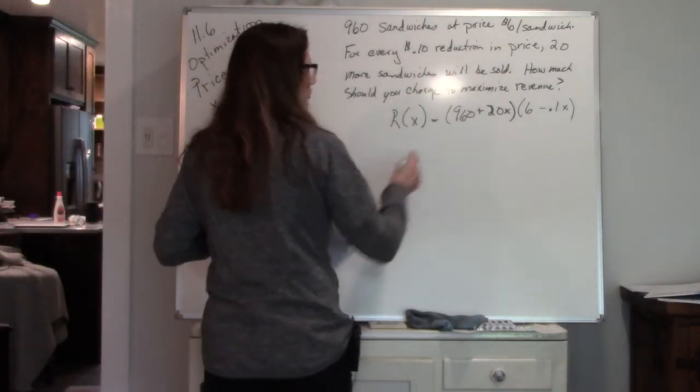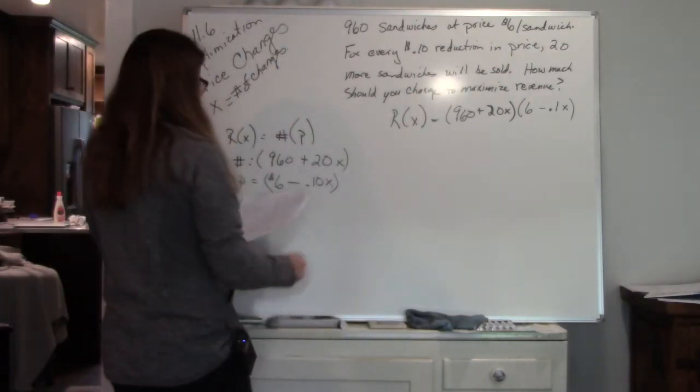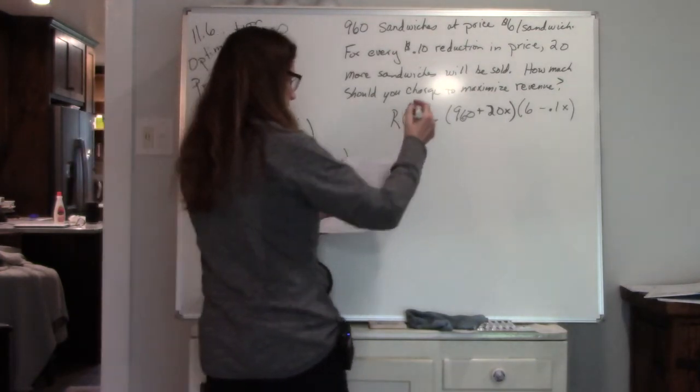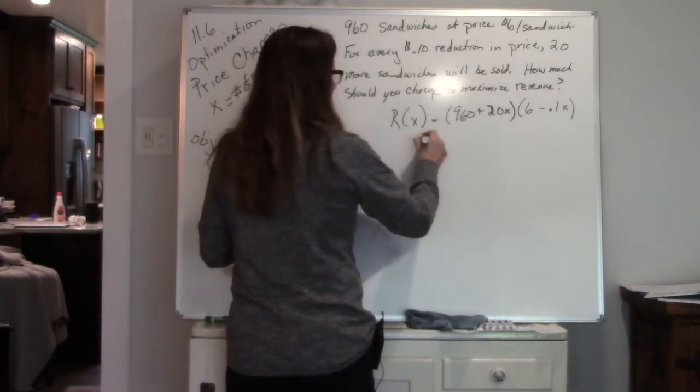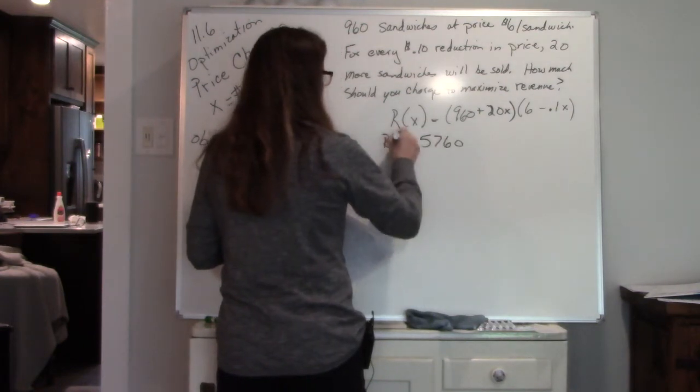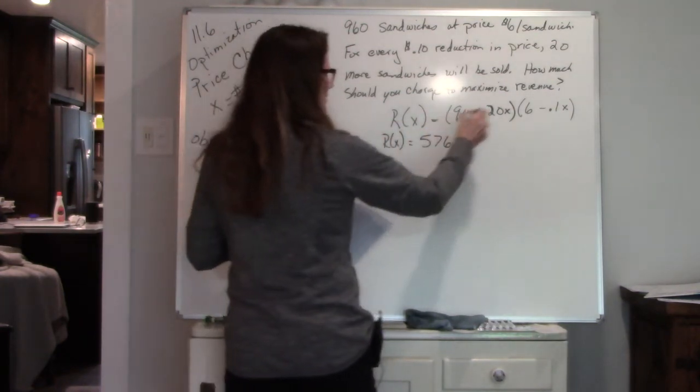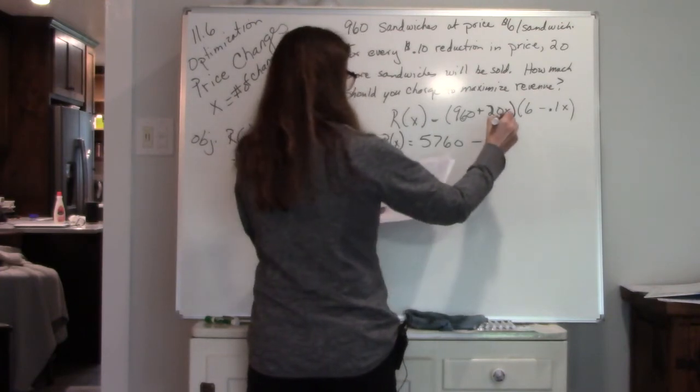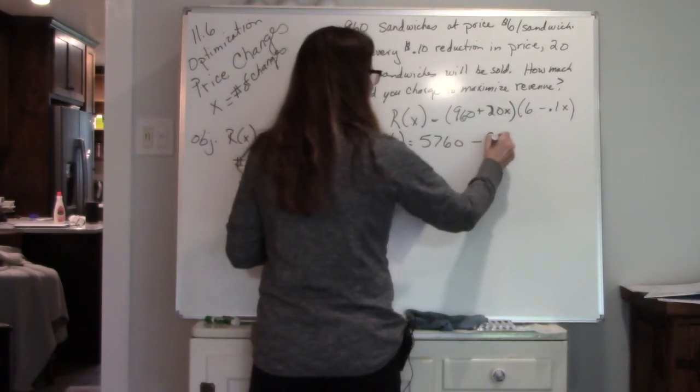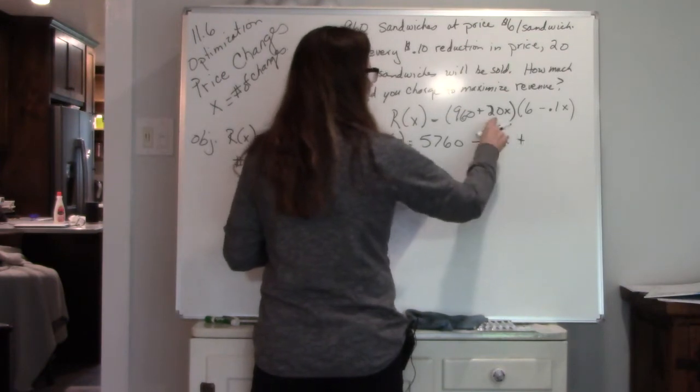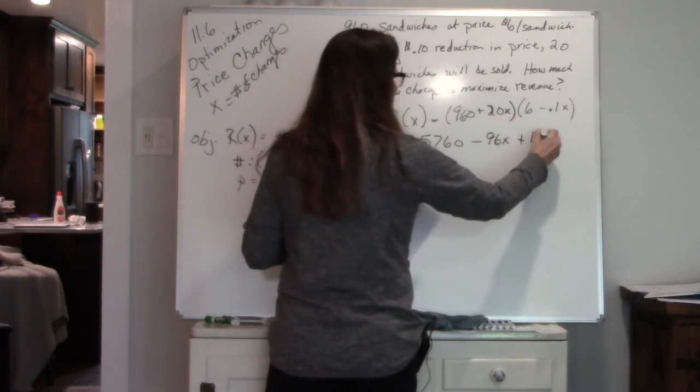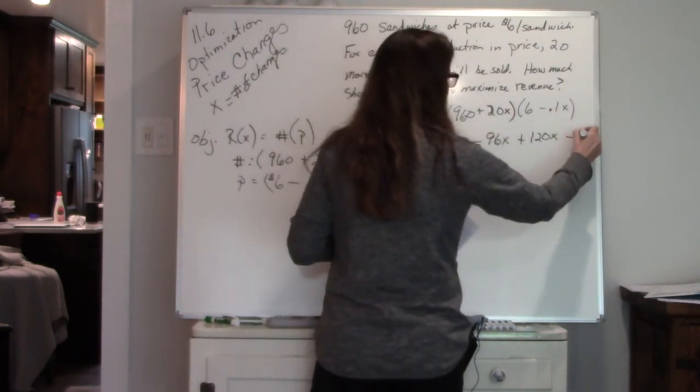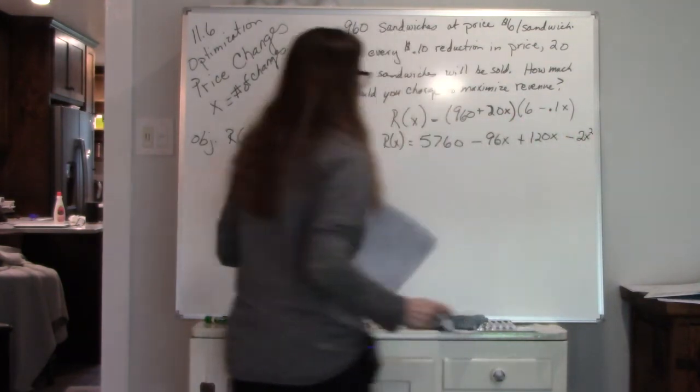So 960 times 6 is 5760. 960 times negative 0.1 is a negative 96x, plus 20x times 6 is 120x, minus 20x times 0.1x is a negative 2x squared.